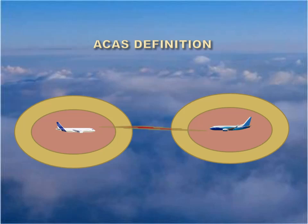ICAO Annex 2 shows the official definition of ACAS: an aircraft system based on secondary surveillance radar transponder signals which operates independently of ground-based equipment to provide advice to the pilot on potential conflicting aircraft that are equipped with SSR transponders.